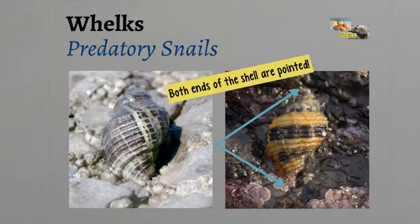Whelks are predatory snails that feed on other snails and barnacles. They feed by drilling holes with their tongue-like appendage called a radula into the shells. As you can see here, the coiled shells can be lots of different colors. Both ends of the shells are pointed — this is an important characteristic so that you don't mis-ID them from other snails.